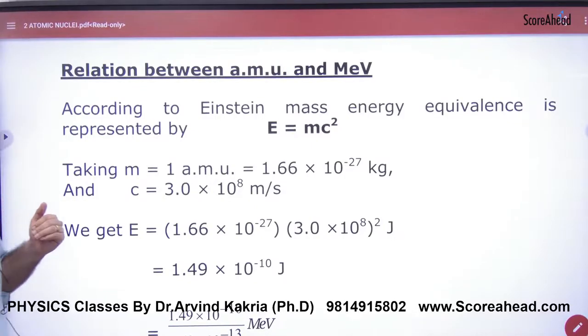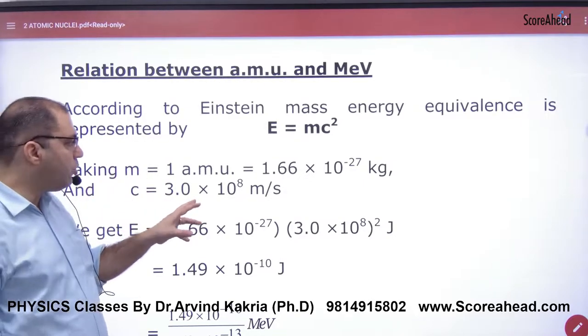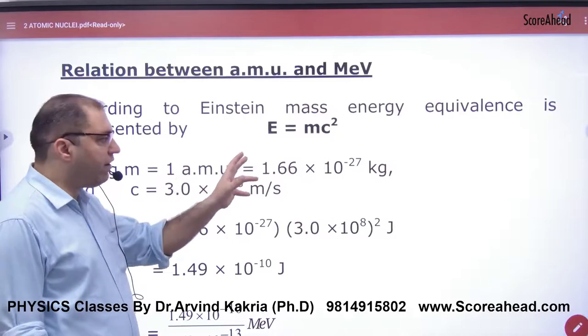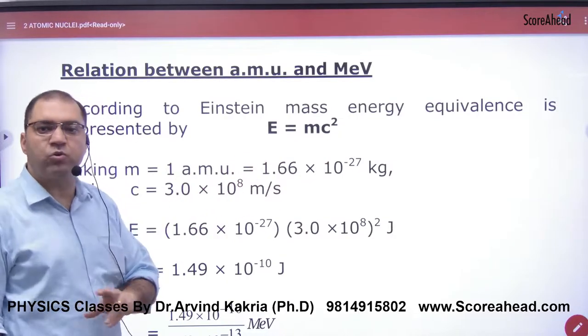So what is the relation between AMU and MeV? The AMU is the mass unit. So the AMU is 1.66 × 10^-27 kg.